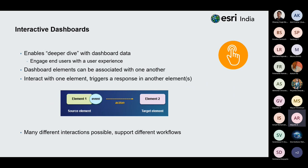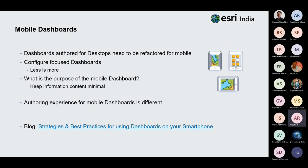You can make your dashboard interactive to engage end users. Dashboard elements can interact with one another by triggering responses in another element. For example, selecting and highlighting features on the map can filter a serial chart accordingly. Clicking a selector can filter data, lists, and gauges. Mobile dashboards are created the same as desktop applications but need to be refactored for mobile — less is more, since mobile dashboards have less real estate than desktop counterparts.